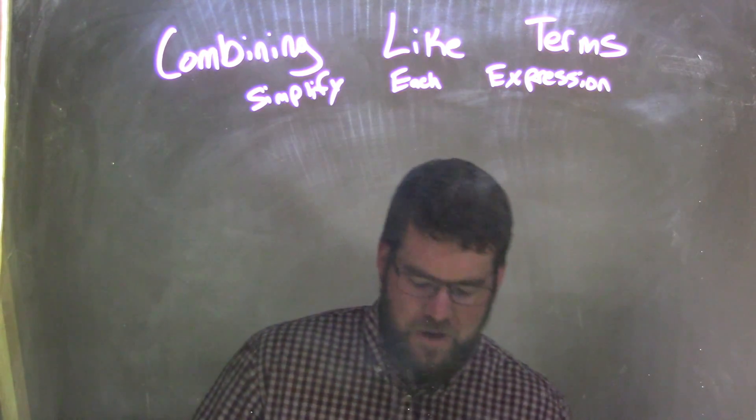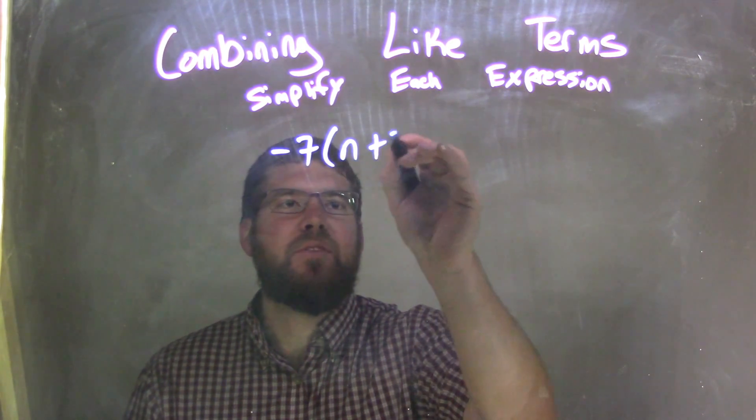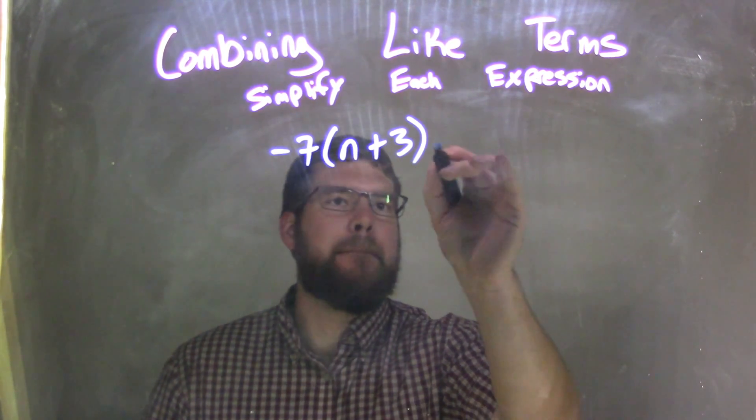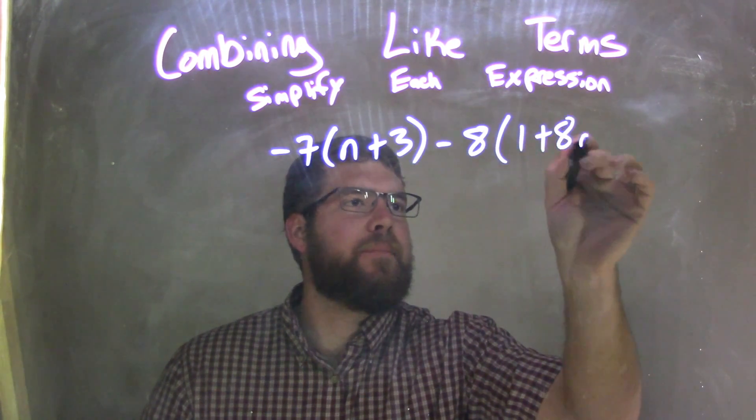If I was given this expression: negative 7 times (n plus 3) minus 8 times (1 plus 8n).